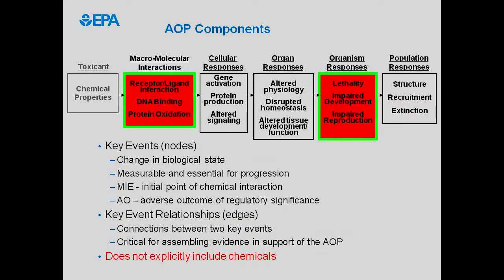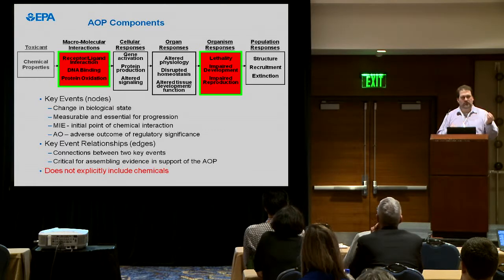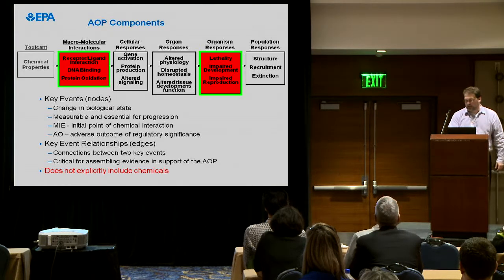AOPs are actually pretty simple. They really only have two main components: key events and key event relationships. The key events are the nodes — they represent a change in biological state. We want to actually be able to make measurements and determine temporality of the key events and get quantitative relationships between them. We have two special key events: the molecular initiating event, which is the biological entity that directly interacts with the chemical, and the adverse outcome, which is something at the organism or population level with regulatory significance.